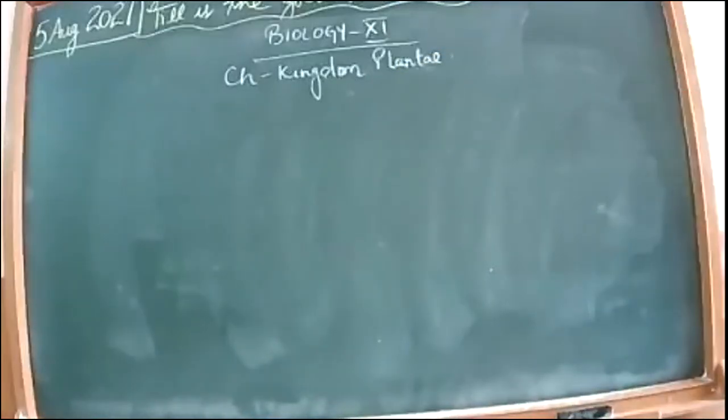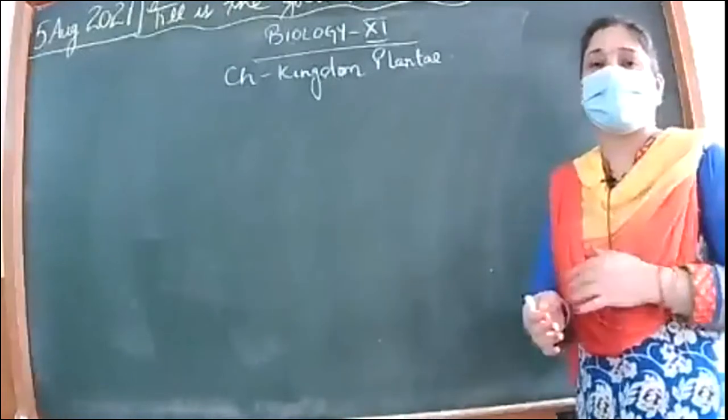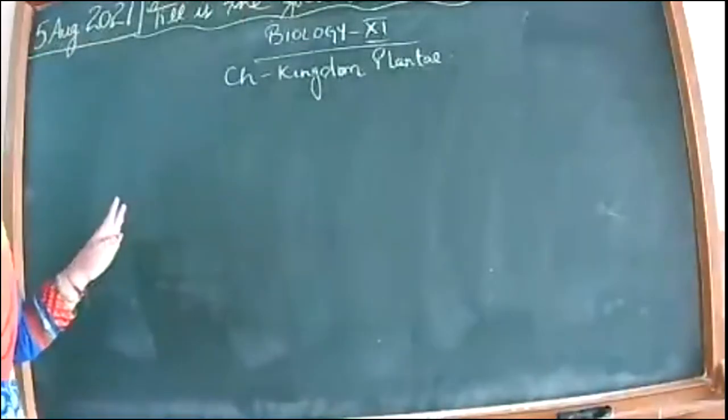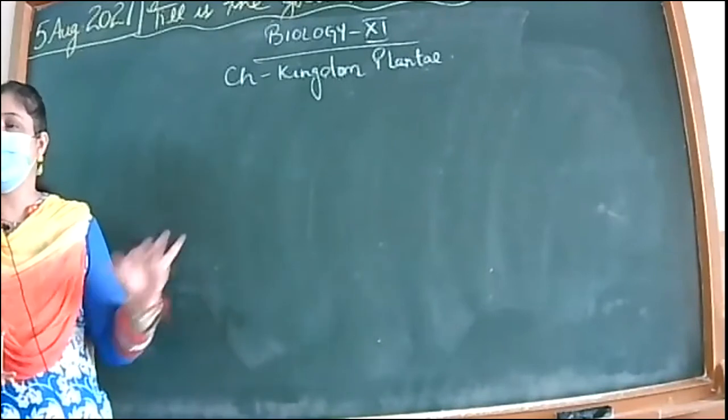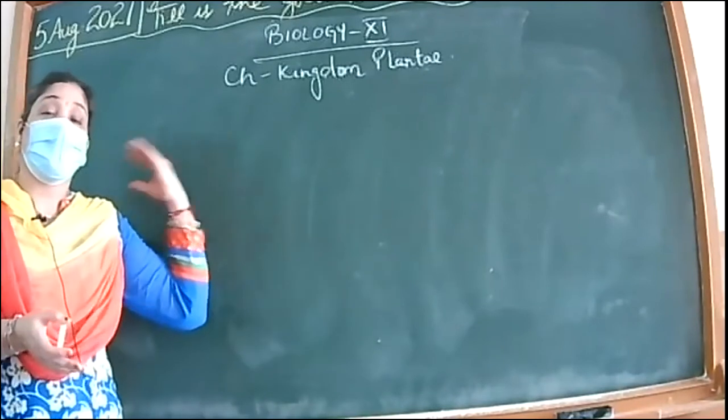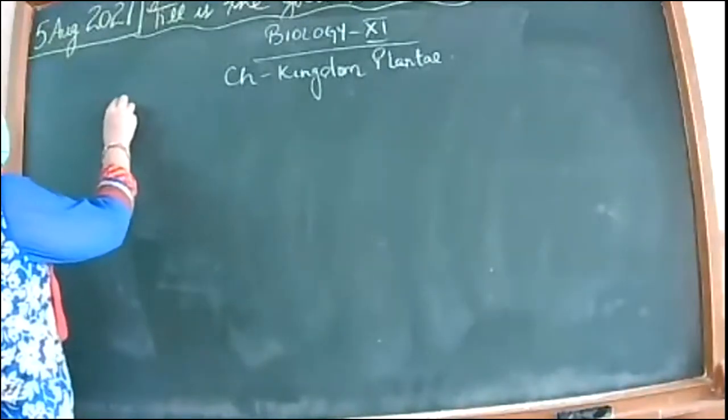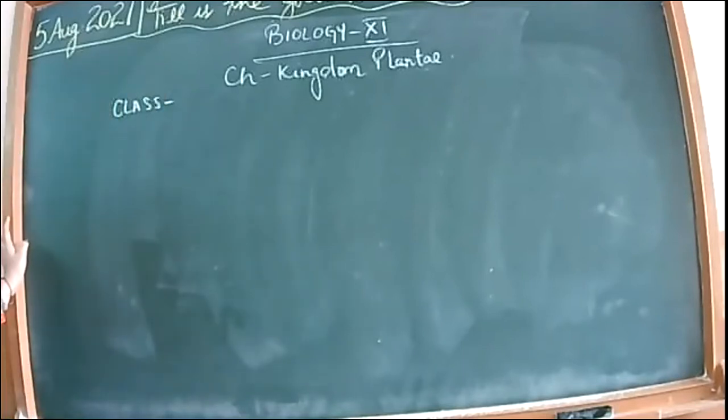Yesterday we finished up with the general characters of the Thallophyta members. We talked about the classification and modes of reproduction - asexual, sexual, spore formation, and gamete formation. Along with those characters, there are some specialized characters which provide the different classes of the division Thallophyta.